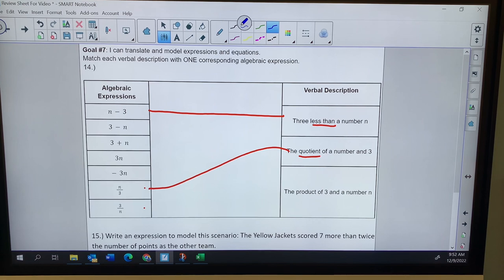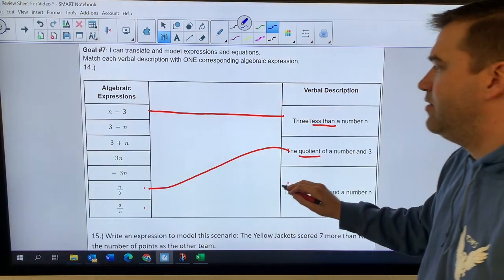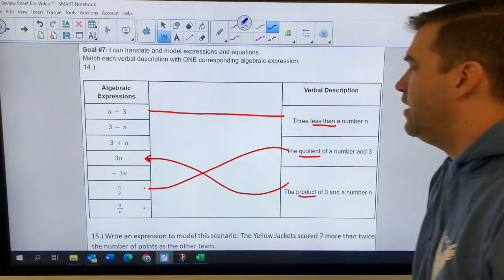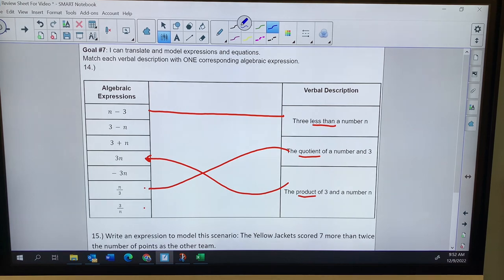And finally, the product of three and a number. Product means multiplication. I'm multiplying three times N. Right there. And that's how I would match up number 14.